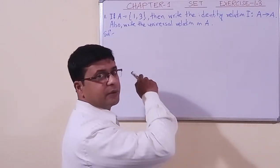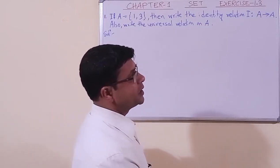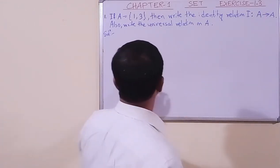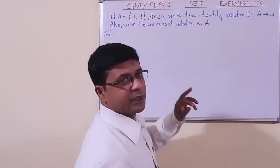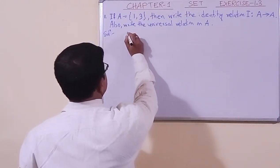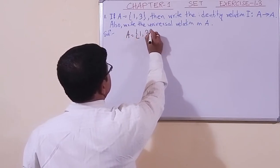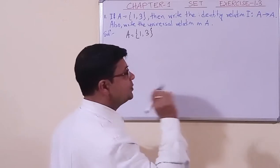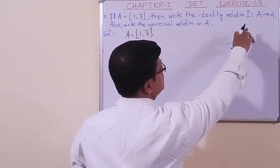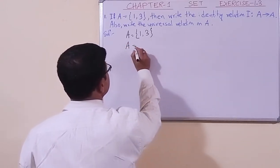Now let us read question number 1. The question is: if A is a set of two elements {1, 3}, then write the identity relation on A. Also write the universal relation on A. There are two parts. Let us do the first part. The relation is identity relation from A to A, meaning there are two sets A and A.